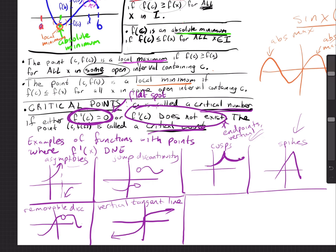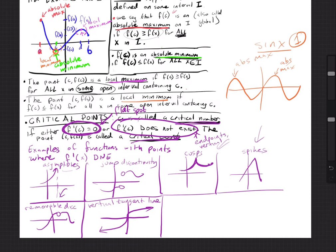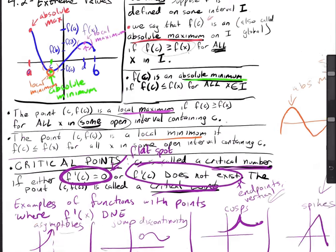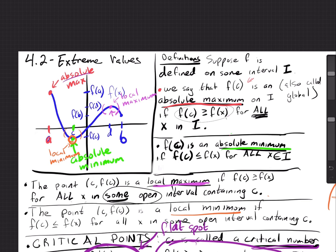For today we're going to focus on absolute maximums and minimums. We'll look at local maximums and minimums a different day. One thing to notice — looking at the picture — I have an absolute maximum at the endpoint. And the absolute minimum is at the same spot as a local minimum.